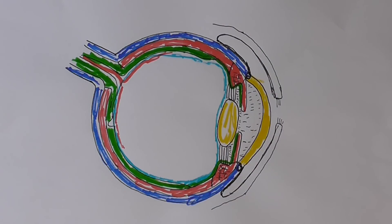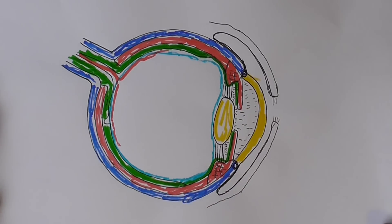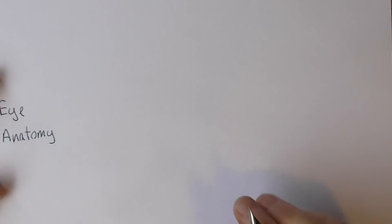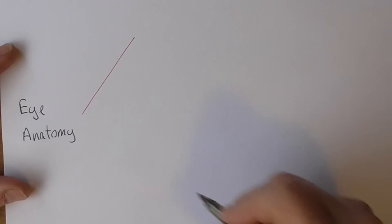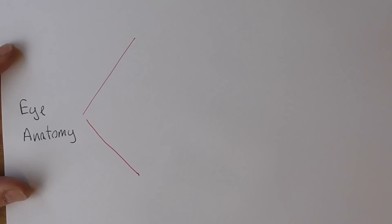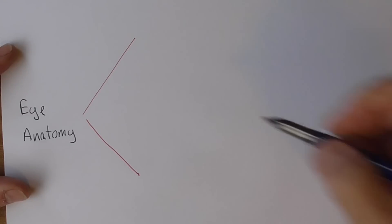Here's the diagram of the eye we've just developed in the previous clip. The anatomy here is somewhat complicated so I want to try and systematize it. When we're talking about eye anatomy, the structures in the eye, we can divide this into two sections: there's the internals and the externals, or the layers.